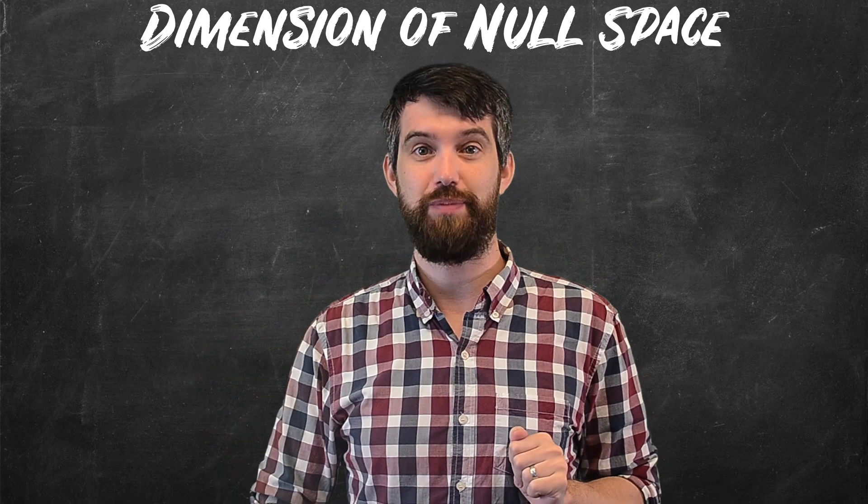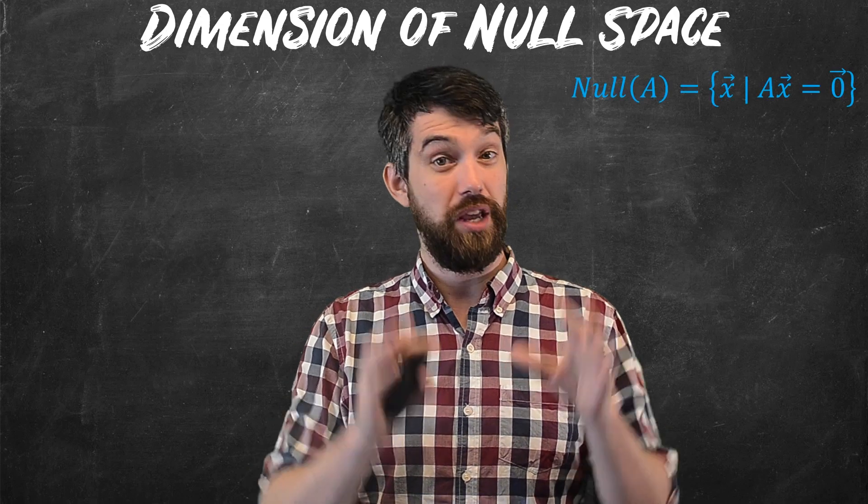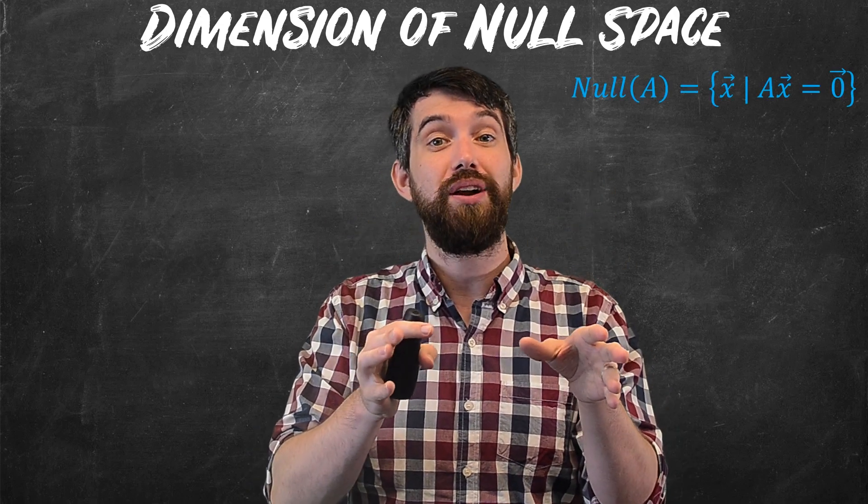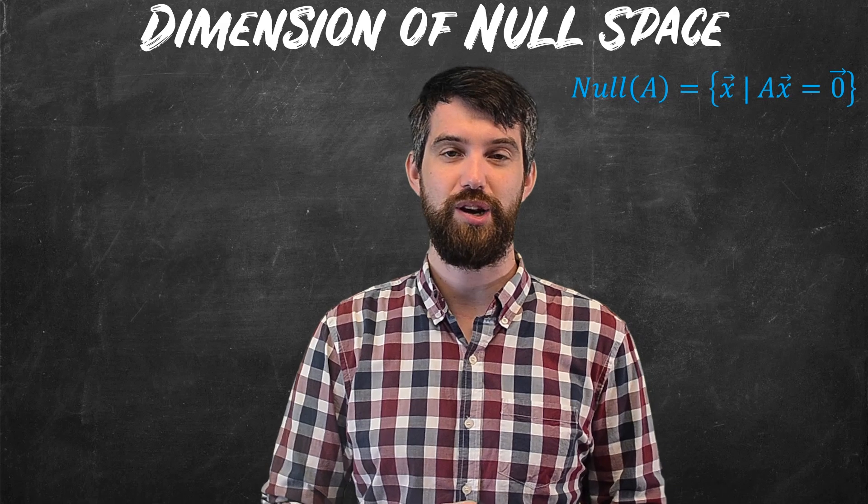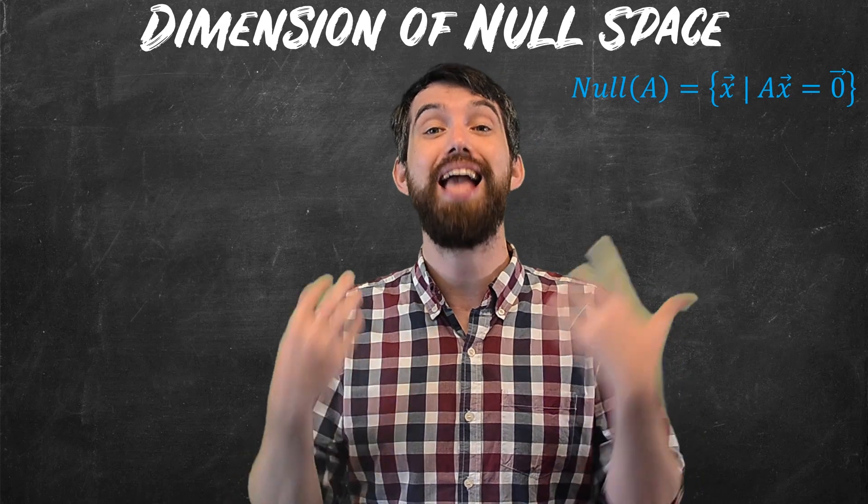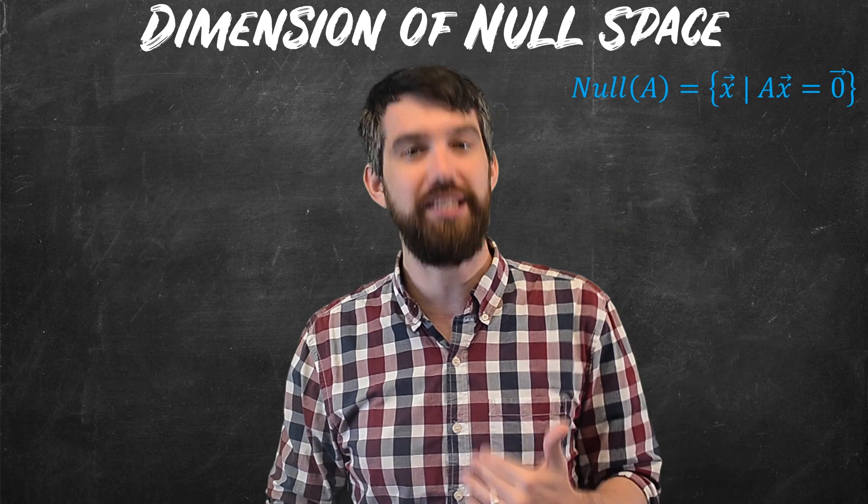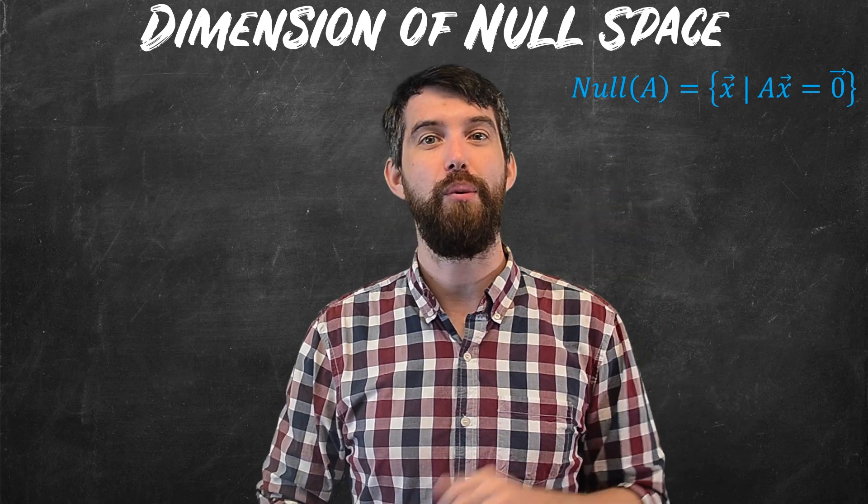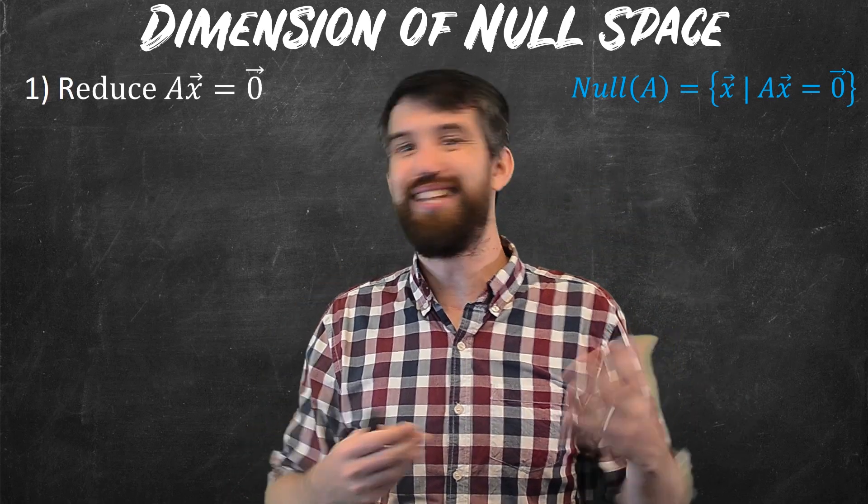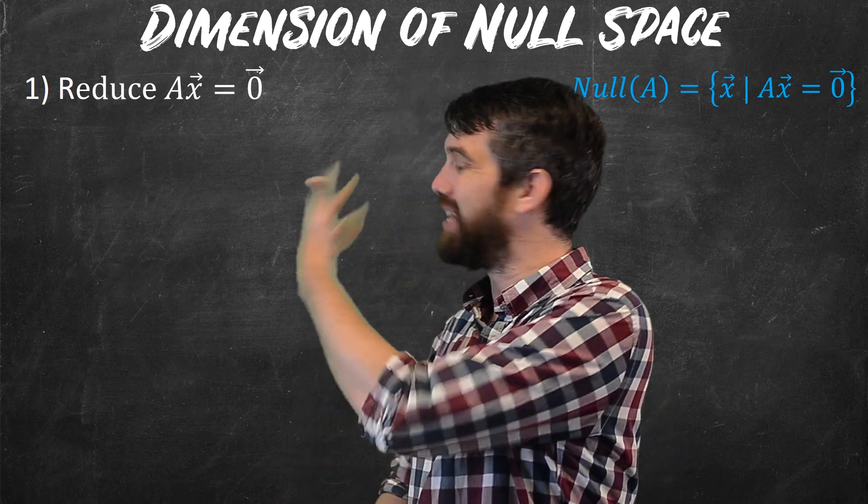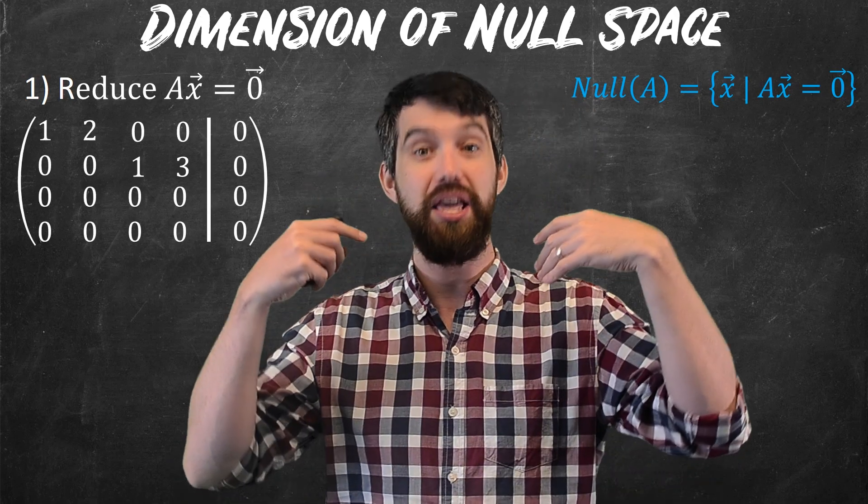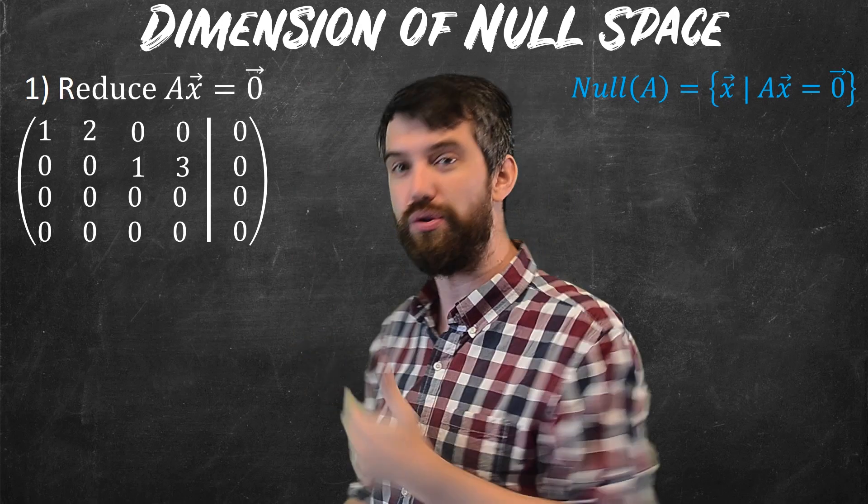So first off, dimension of the null space. I'll remind you that the null space is all the vectors that are killed off by applying the particular matrix A. They're all the vectors where Ax is equal to zero. And my steps to find a basis for this are, number one, I want to go and reduce the matrix. So if it's Ax equal to zero, I want to see maybe some example like this where I've got my augmented matrix with the zero column.